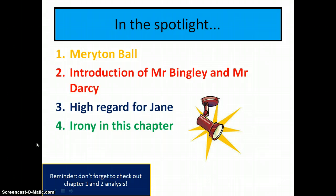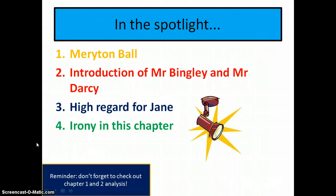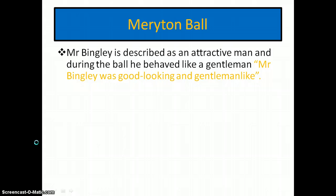We're going to see the high regard for Jane at the ball and what people say about her, and as always we'll look at how Austen creates irony in Pride and Prejudice. If you haven't watched the Chapter 1 and Chapter 2 analyses, now would be a good time. The first thing we'll look at is the Meryton ball and why it is an essential part of this chapter.